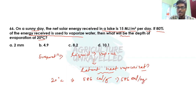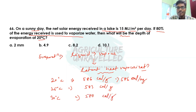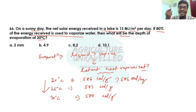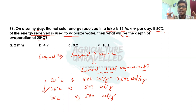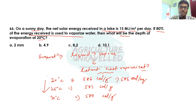Similarly, at 25 degrees Celsius it is 583 calorie per gram, and at 30 degrees Celsius it is 580 calorie per gram. So as temperature increases, the latent heat of vaporization decreases, because if temperature is already higher, less heat is needed for evaporating water. This is important for examinations — at 20 degrees Celsius the latent heat of vaporization is 586 calorie per gram.